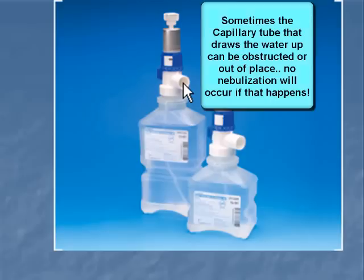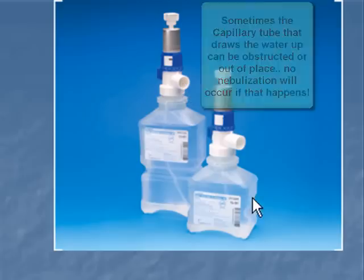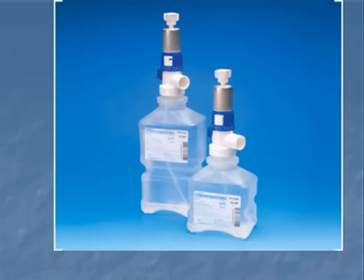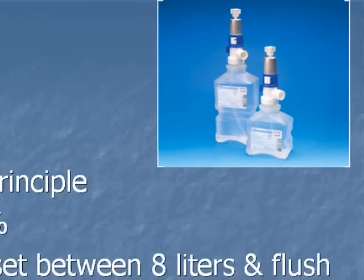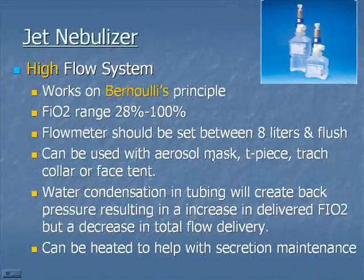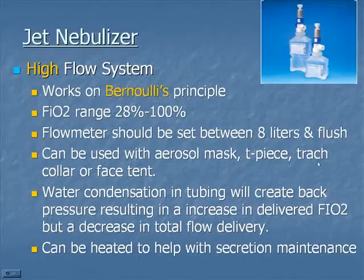You should run jet nebulizers at least 8 liters per minute — you need at least 8 liters to power the jet. If run less than 8 liters, you won't get proper mist. Always check that you see a mist before putting it on the patient. You can use these with an aerosol mask, a T-piece for a trach, a trach collar, or a face tent. Water will collect in the tubing, causing back pressure on the jet and air entrainment port — any back pressure means less room air will be entrained, raising the delivered FiO2.